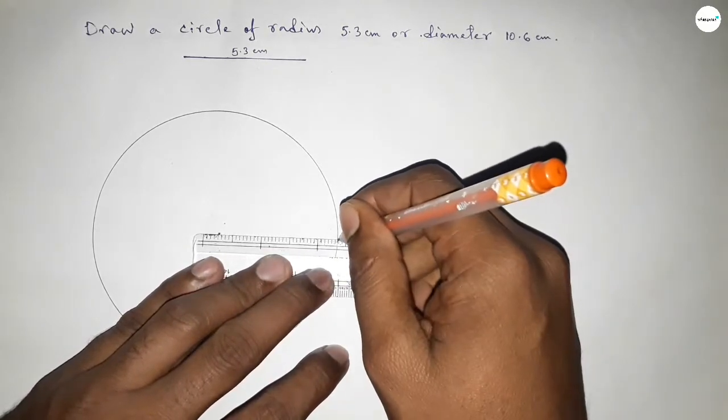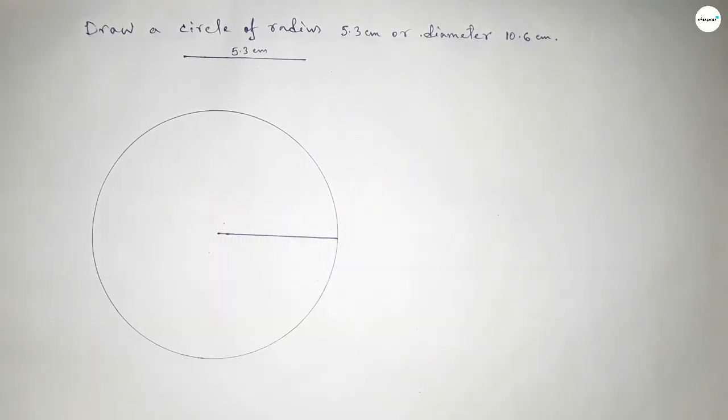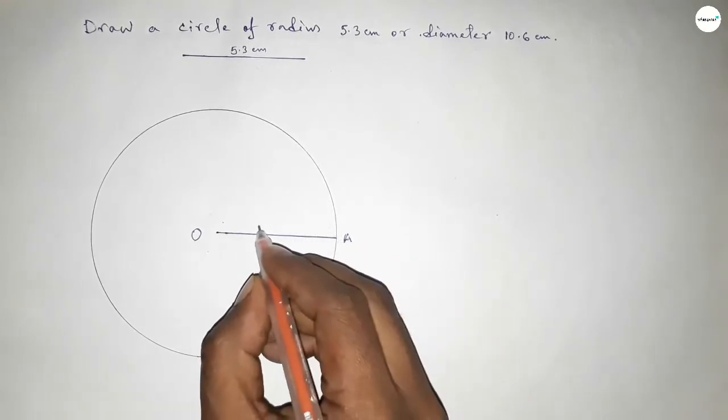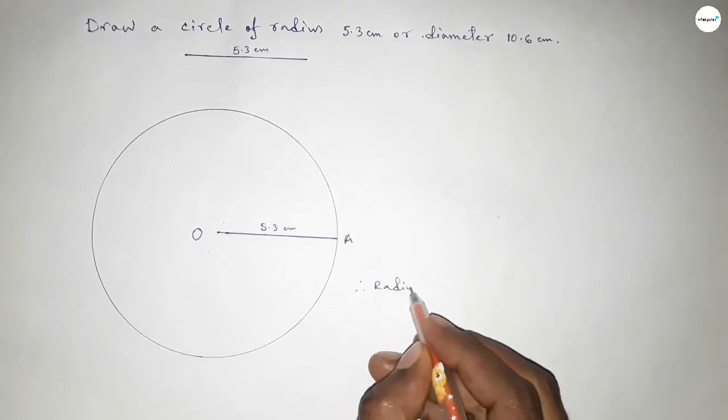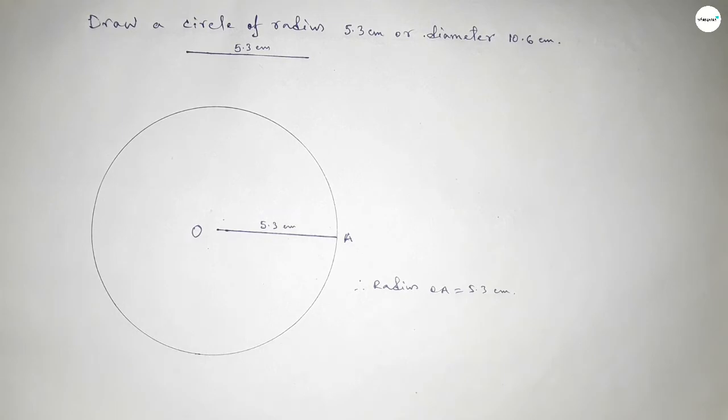This is the radius of this circle. Taking here center O and here A, so OA is 5.3 centimeter. Therefore radius OA equals 5.3 centimeter. That's all, thanks for watching. If this video is helpful then share it.